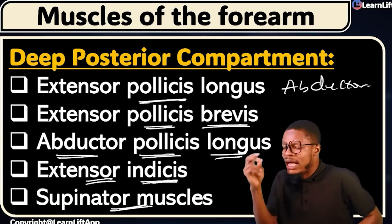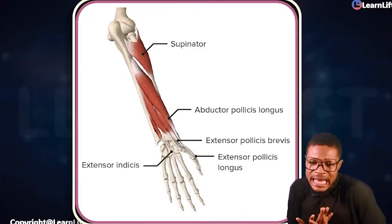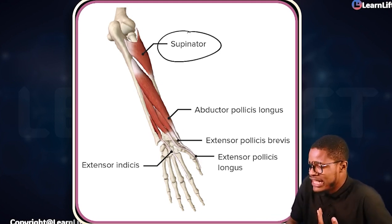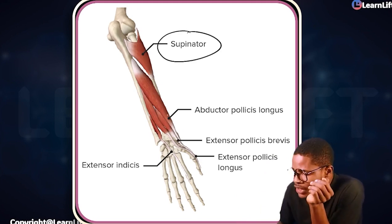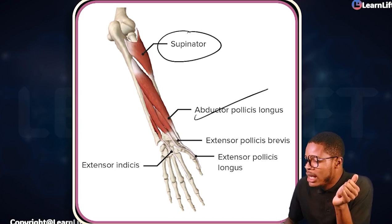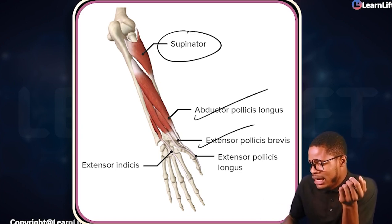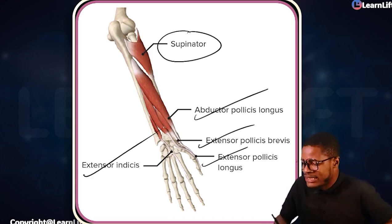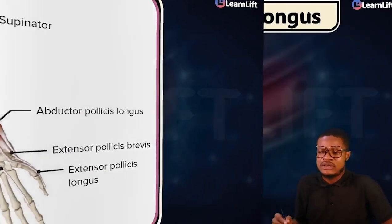Looking at this diagram, you can see the supinator muscle, the abductor pollicis longus, extensor pollicis brevis, extensor pollicis longus, and extensor indicis — all five muscles of the deep posterior compartment of the forearm.